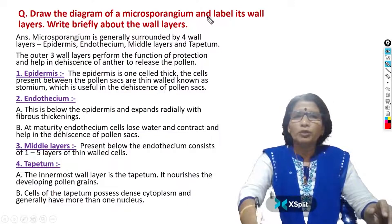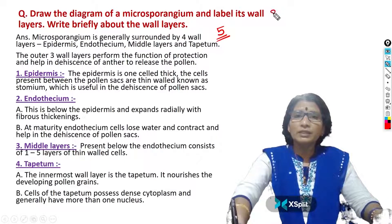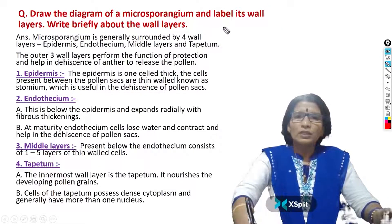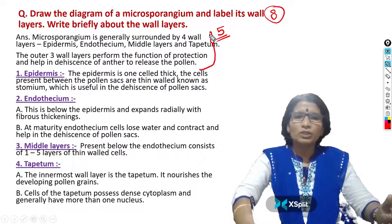Draw the diagram of your microsporangium and label its wall layers, then write briefly about the wall layers. This is an 8-mark question. You have to answer like this: to this description, you will get 5 marks. This is the introduction part.